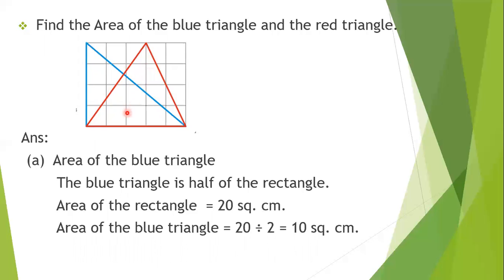First let's find the area of the rectangle. The length is five centimeters and the breadth is four centimeters. The formula for the area of a rectangle is length × breadth: five times four equals twenty square centimeters. The area of the rectangle is twenty square centimeters. The area of the blue triangle is half of twenty — that is ten square centimeters.